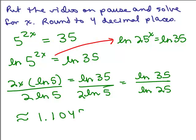1.1045. And again, you can check this by putting 1.1045 in for x in the original problem, multiply it by 2, do 5 to that number and see if it gets close to 35. You can also use log base 10 and make sure you get the same answer. Sometimes people don't trust their calculator, which is a good thing. And so if you do it two ways and you still get the same answer, you should be all right. Okay, let's go on to a different type.